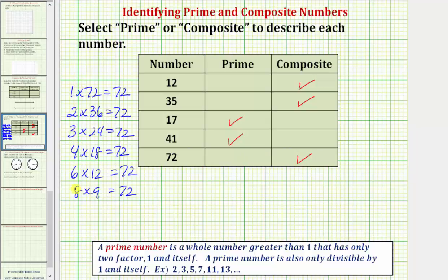It has a total of twelve factors: one, two, three, four, six, eight, nine, twelve, eighteen, twenty-four, thirty-six, and seventy-two. I hope you found this helpful.